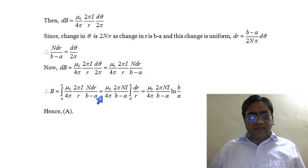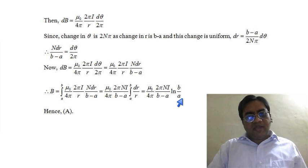Constants can be taken outside the integral, μ₀ by 4π etc. So, we have integral a to b dr by r and that gives us this as the answer and that is option A.